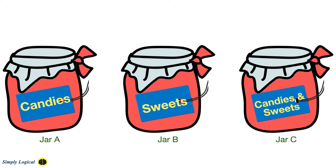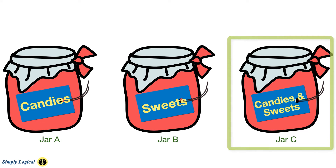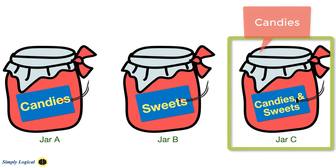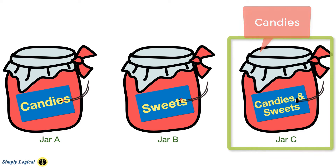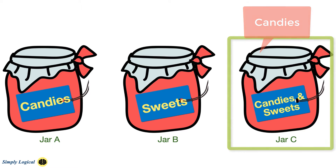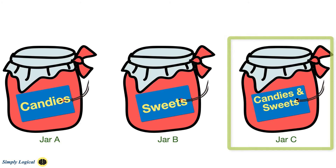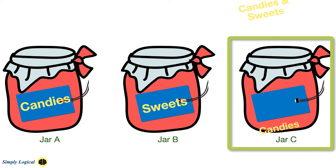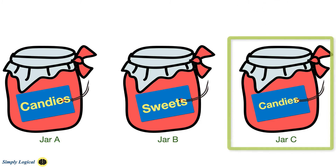In step 1, you have to pick only one eatable from jar C. Suppose the eatable is a candy — then jar C contains candies only, because all the jars were mislabeled. Remember, this jar cannot contain sweets because it is mislabeled. The only choice for this jar is candies. Most importantly, this is enough to label the other two jars correctly.